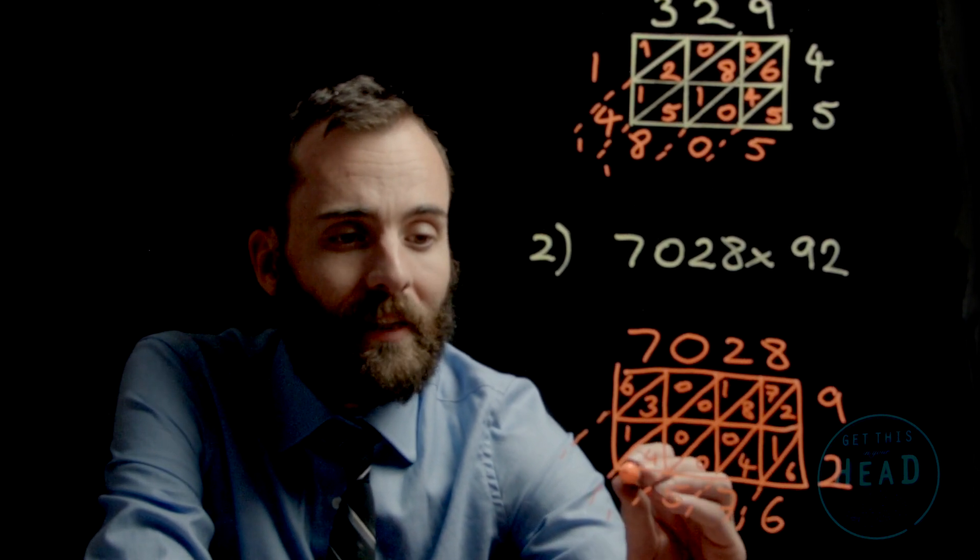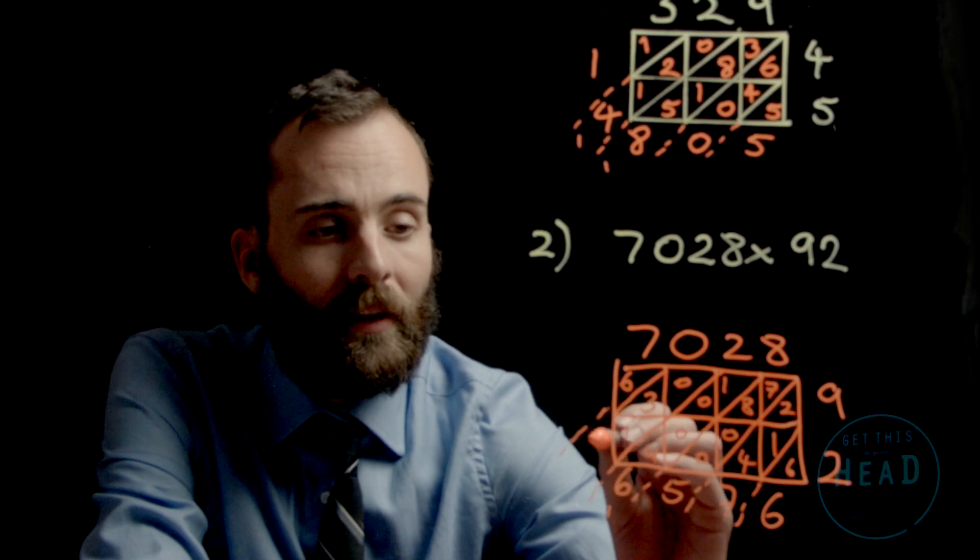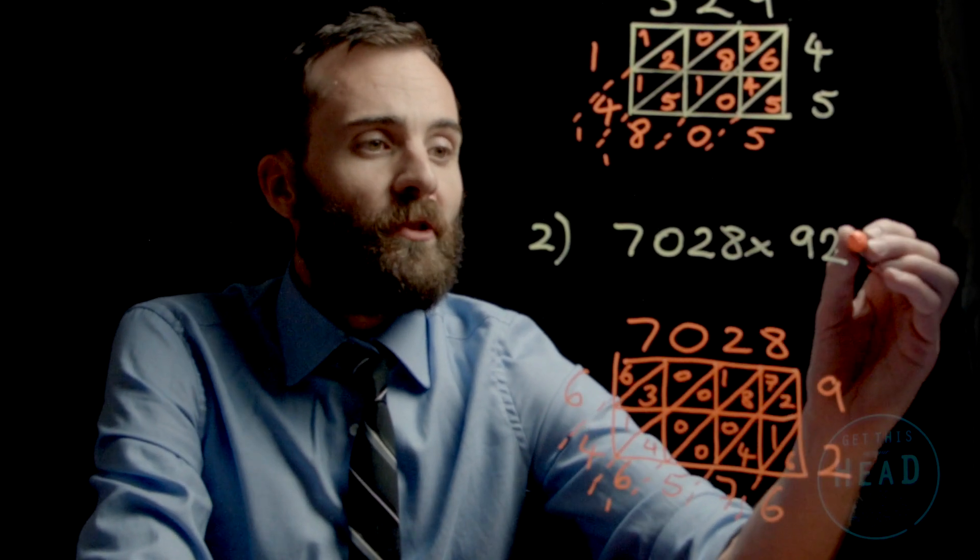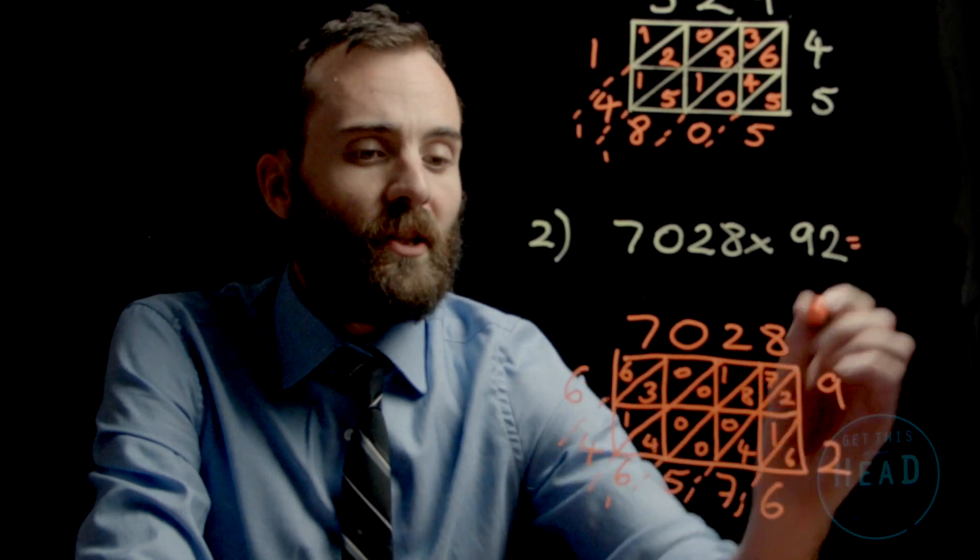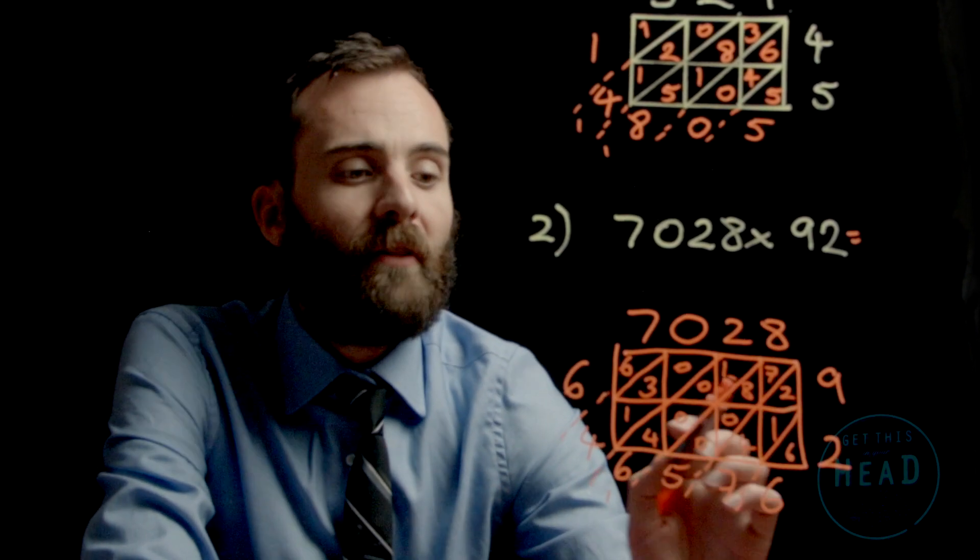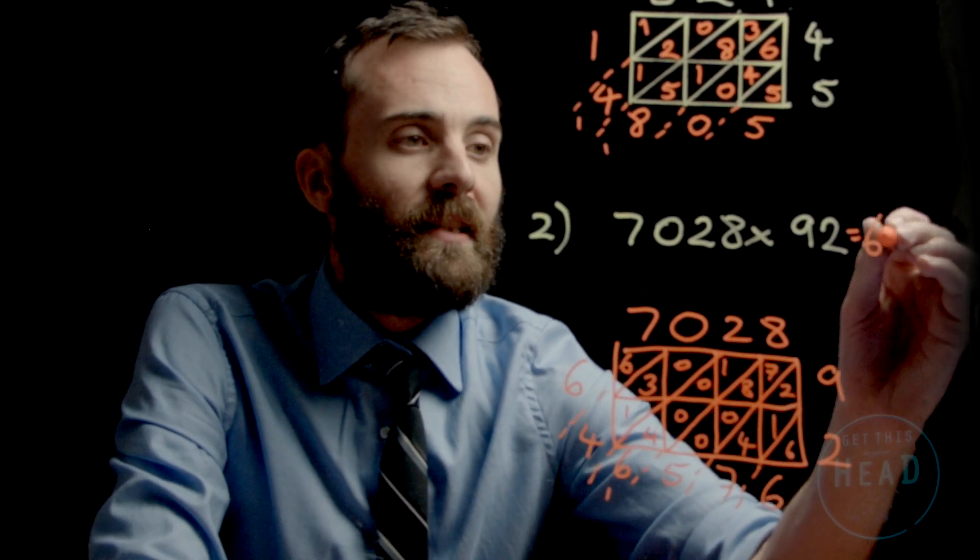The 1 and the 4 is 5, add the 1 is 6. 3 and the 1 is 4. The 6 by itself. Therefore, 7,028 multiplied by 92 is 646,576.